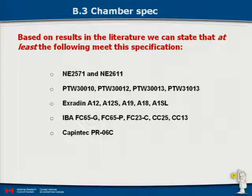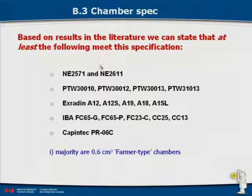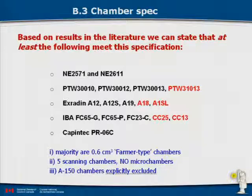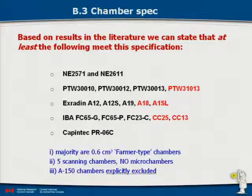Based on that chamber spec, the chambers that meet the requirements include mostly 0.6 cc farmer chambers, and five scanning chambers. No microchambers and no A150 chambers meet reference class. The reason A150 is excluded is that it's hygroscopic, and data in the literature show large variations depending on storage conditions and environment, making it very difficult to monitor the stability of the calibration coefficient.